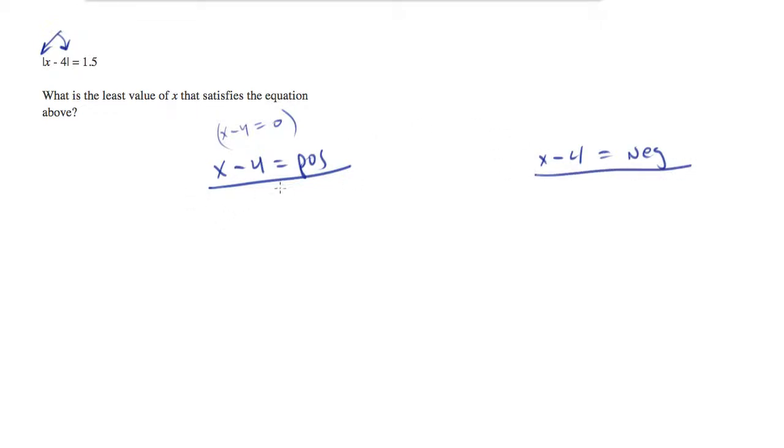In the case of x minus 4 being positive, the absolute value sign does nothing. And if the absolute value sign does nothing, we can simply leave it out. In the case where x minus 4 is negative, the absolute value sign has the effect of switching the sign. So we can get rid of the absolute value sign if we simply multiply by a negative.